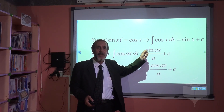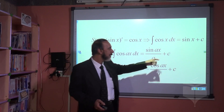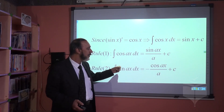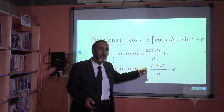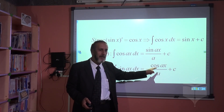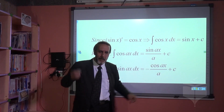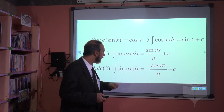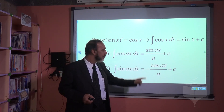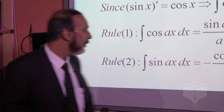Since it is in standard form, the integration of cosine is sine(ax) over a, where a is the derivative of the angle, plus c. What is the integration of sine? Integration of sine is minus cosine(ax) over a. If we find the derivative of minus cosine(ax) over a, we will get sine(ax), because the derivative of minus cosine gives minus-minus sine, which is positive sine.